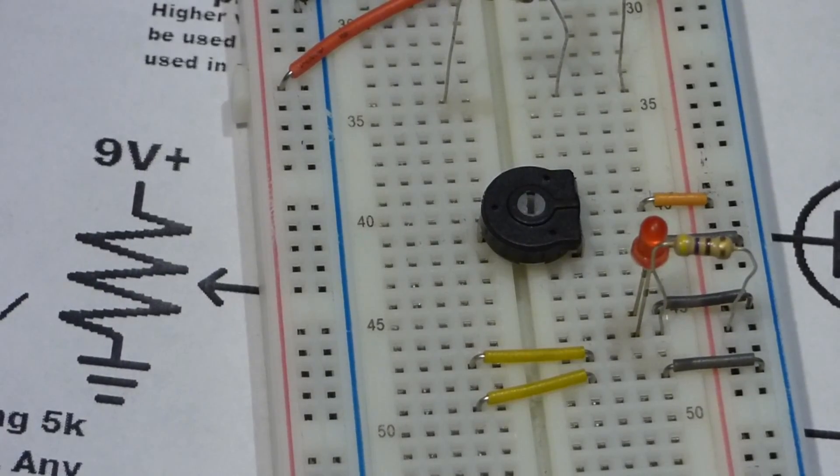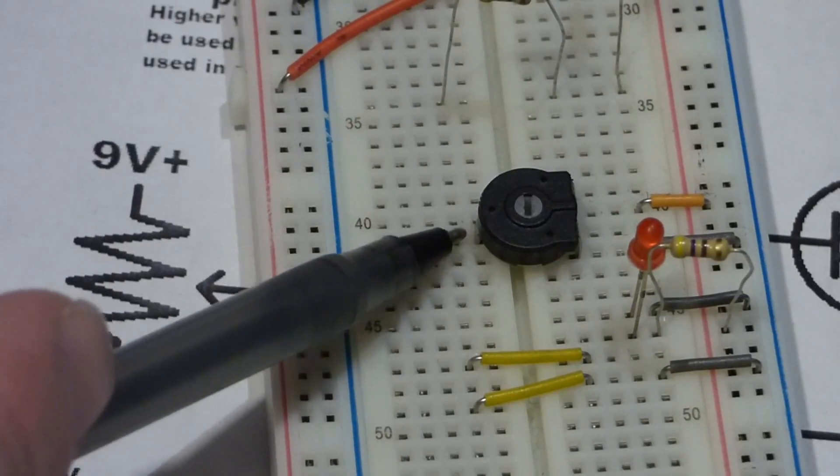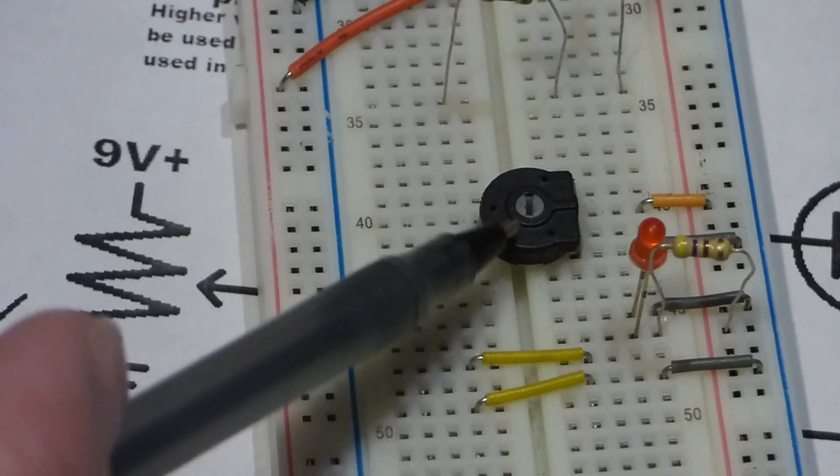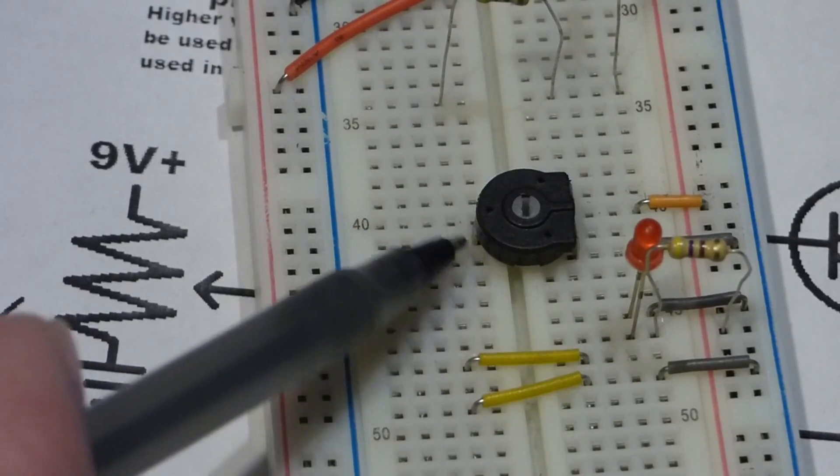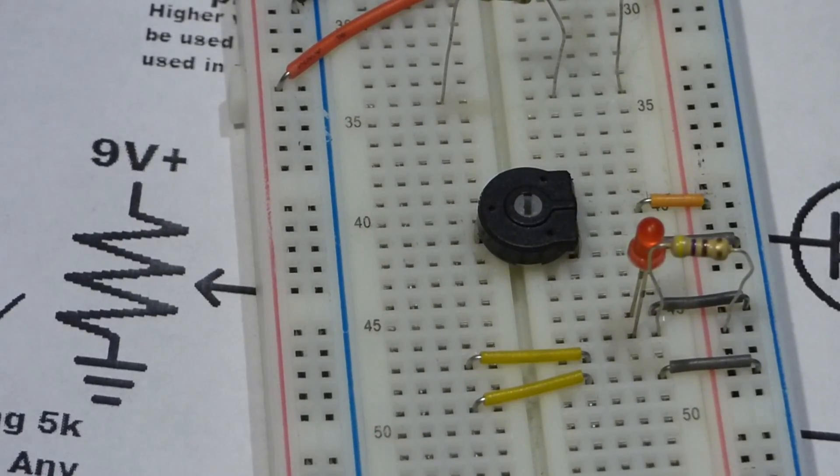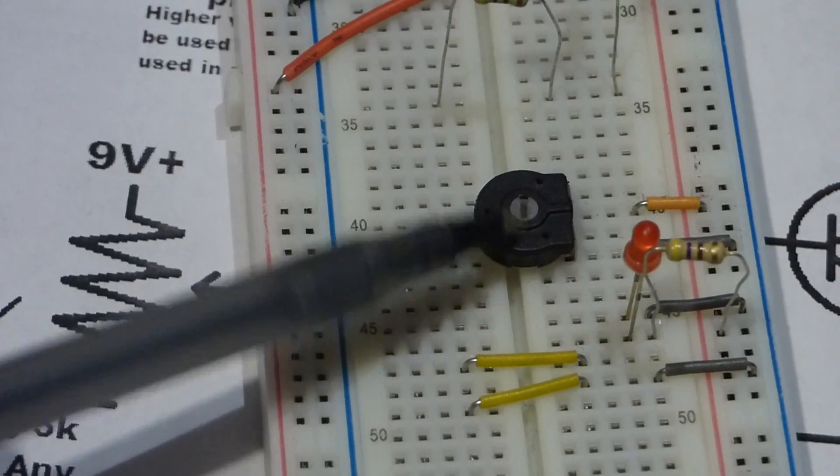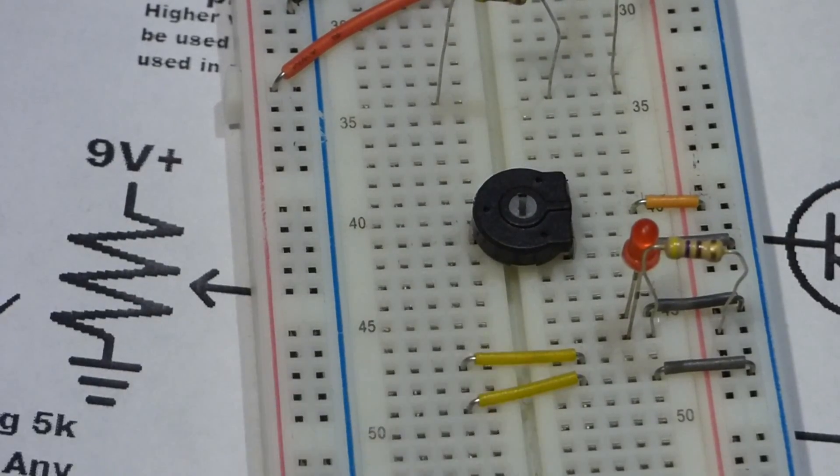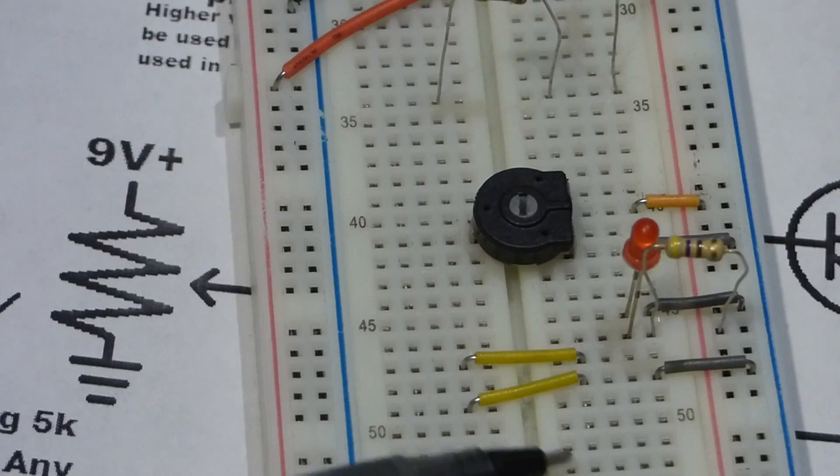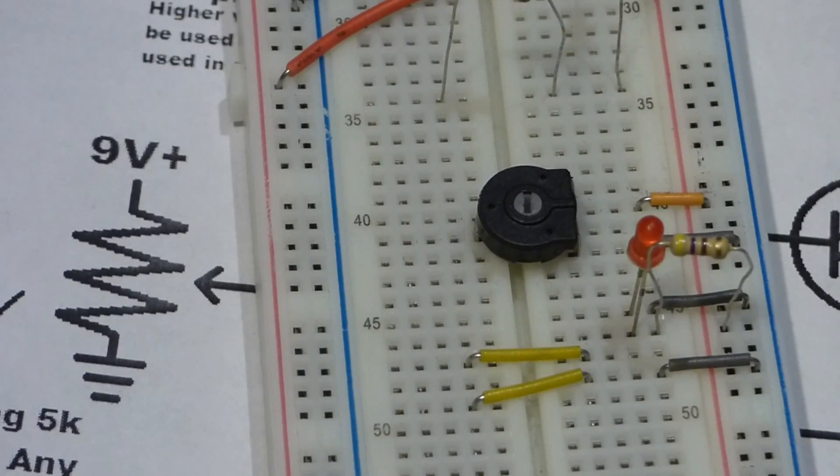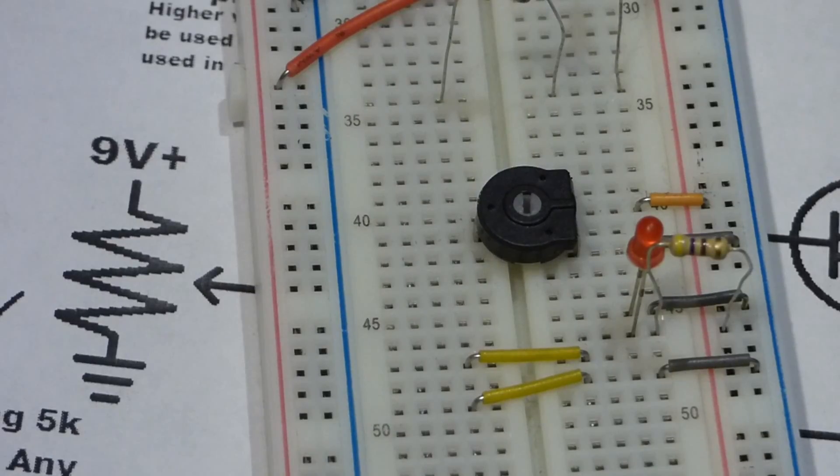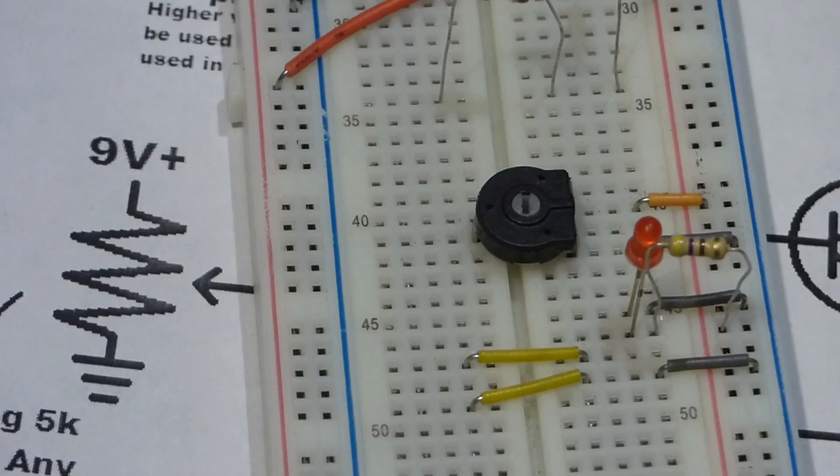They snap in fairly easy, but they stretch the connectors a bit. If I pop this out and try to put other components with smaller leads in there, they might not make a good connection. This is pretty much its permanent spot. The rest of the circuit, I'm just building in this area to work with this trim pot. As I said, it's a five kilo ohm trim pot. But, the value of the trim pot doesn't matter too much.